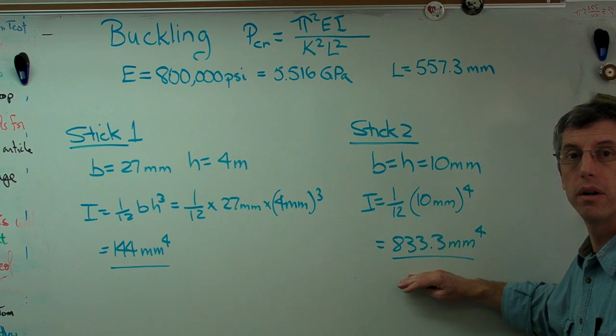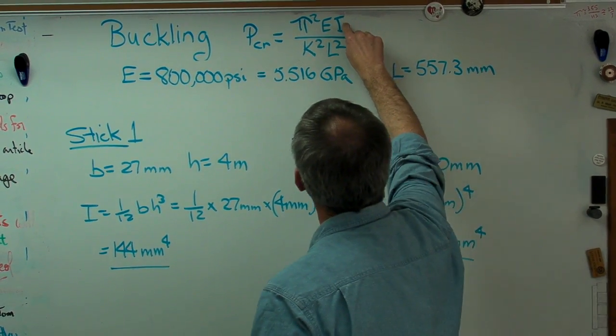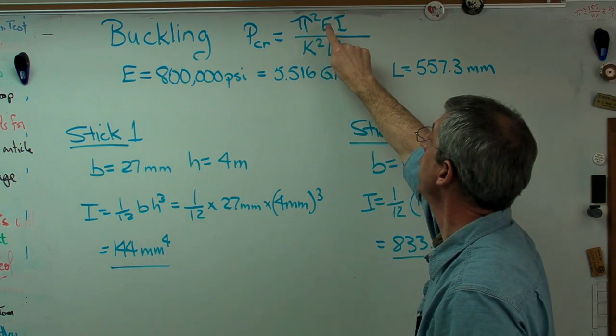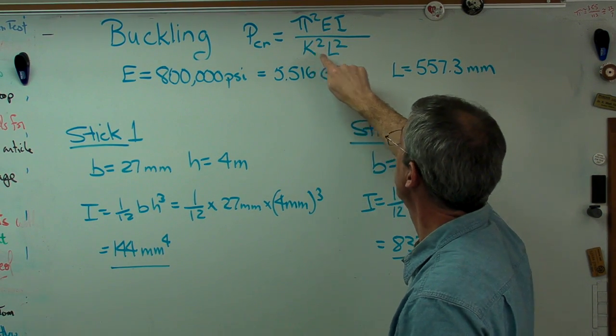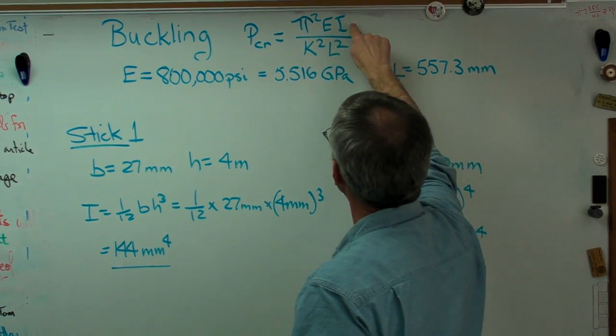Right. Much, much higher area moment of inertia, therefore higher buckling load. That number there has changed, but these other ones haven't. I is unchanged, E is unchanged, K is 1, and L is unchanged. Okay, so all the change in our buckling is due to the change in I.